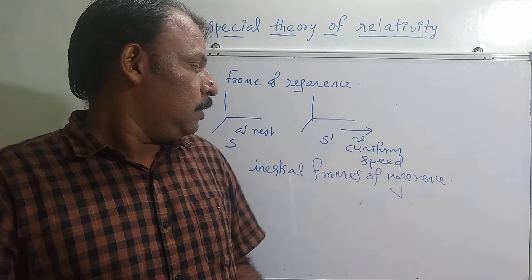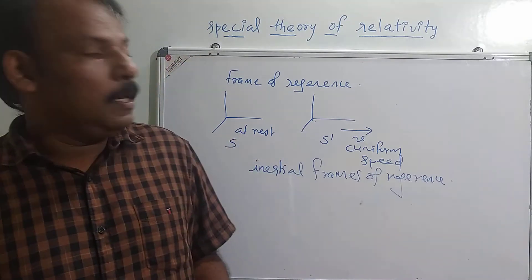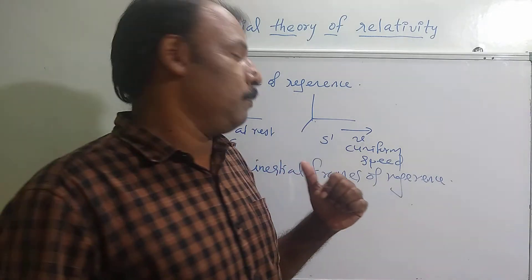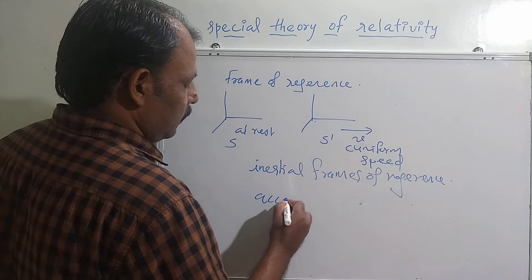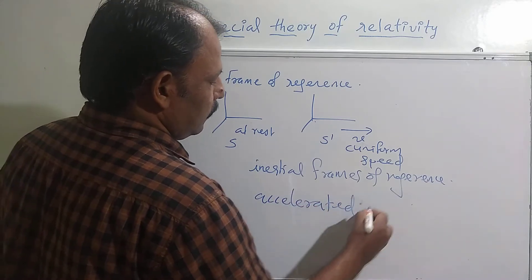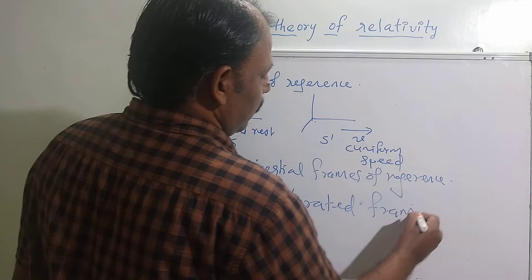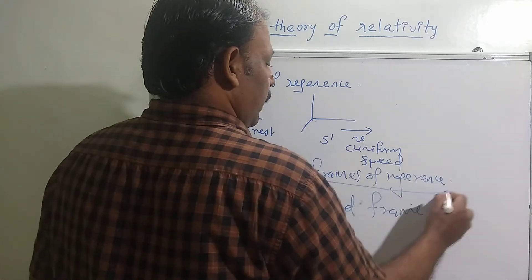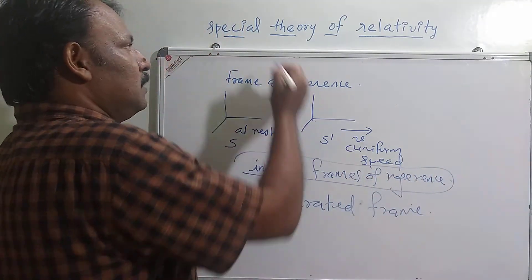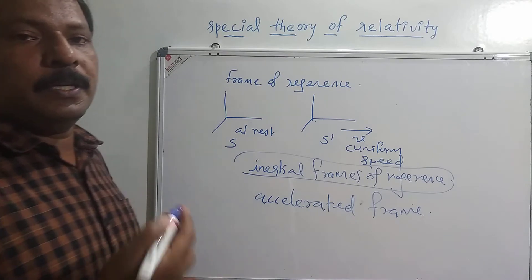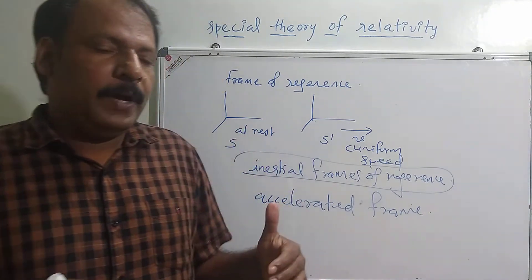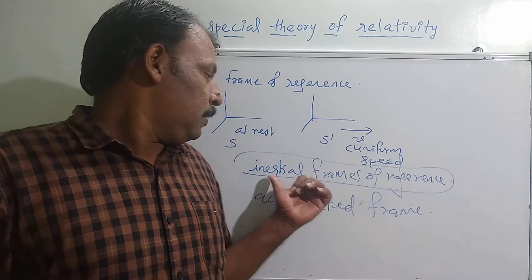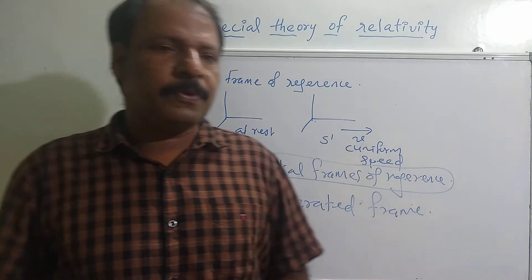Such frames are called inertial frames of reference. Now if a frame of reference is accelerating with respect to another inertial frame, then they are called accelerated frames. So in special theory of relativity, we are dealing with inertial frames of reference. The word 'special' in special theory of relativity means that we confine ourselves to frames of reference that are inertial.